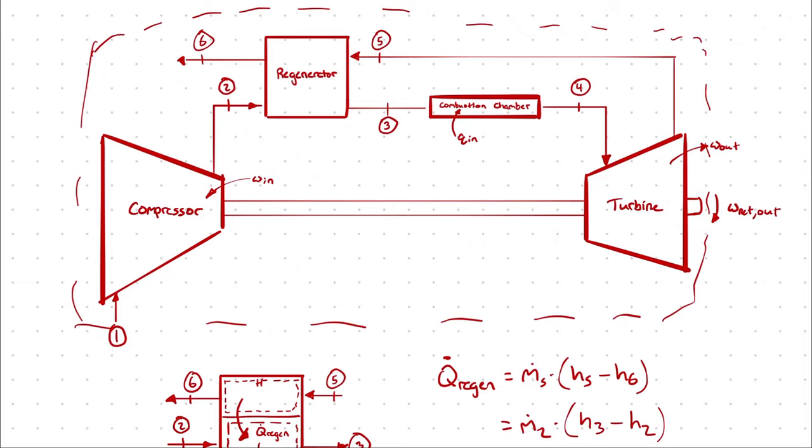When we introduced the regenerator to the Brayton cycle, we tapped into the wasted heat from the turbine outlet and allowed some of that heat to be transferred into the stream prior to the combustion chamber.